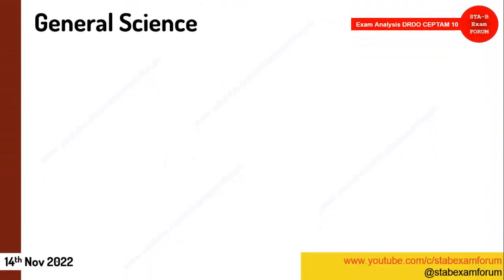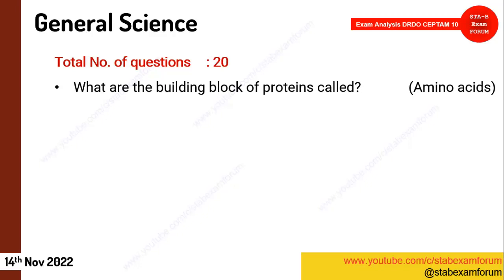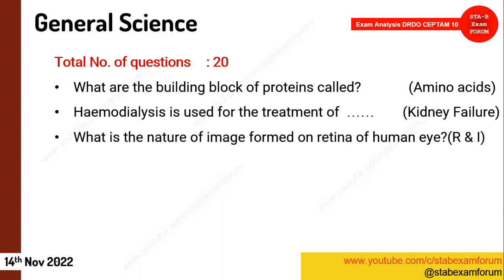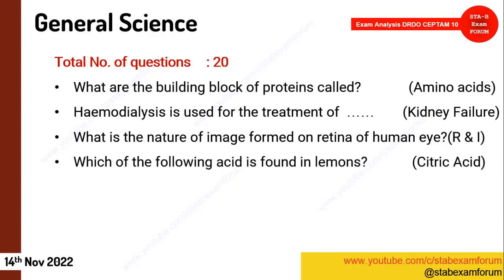Coming to the first section, General Science — today it was very easy as compared to the previous day. Questions were quite easy and students benefited a lot. As usual, the number of questions was around 20 to 25. The first question was: what are the building blocks of proteins called? The answer is amino acids. One question on hemodialysis came — it is used for the treatment of kidney failure. From physics: what type of image is formed on the retina? The answer is real and inverted.